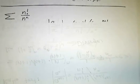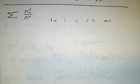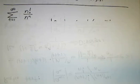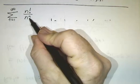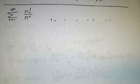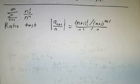Now what about n factorial over n to the n? If you try to take the nth root of it, well you can take the nth root of n^n pretty easily, but how do you take the nth root of n factorial? It's not likely to go anywhere. So instead we use the ratio test.